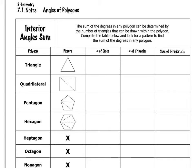So, let's start with the polygons we've been talking about for a while now — triangles. Triangles, of course, have three sides, and you can draw one triangle inside of a triangle. We know already from our study of triangles that the sum of the interior angles is 180 degrees.